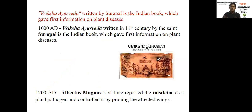These two events — Robigalia and Saint Anthony's fire — are most important from an examination point of view. Coming to important books, the important book written about plant pathology is Vriksha Ayurveda. Vriksha means tree and Ayurveda means science of life or treatment. This book was written during 1000 AD by Saint Surapal. It describes symptoms of plant disease and how to manage plant disease using natural products. This book is still available and is one of the important books on plant pathology from Indian origin.